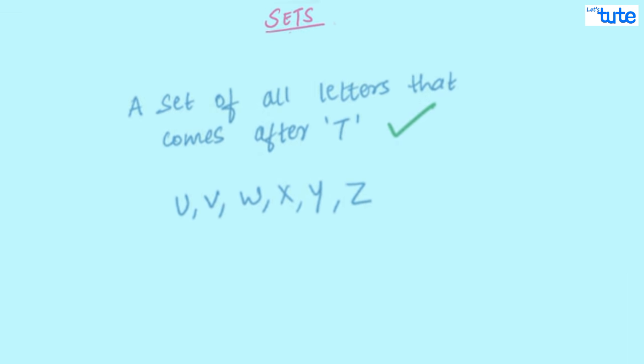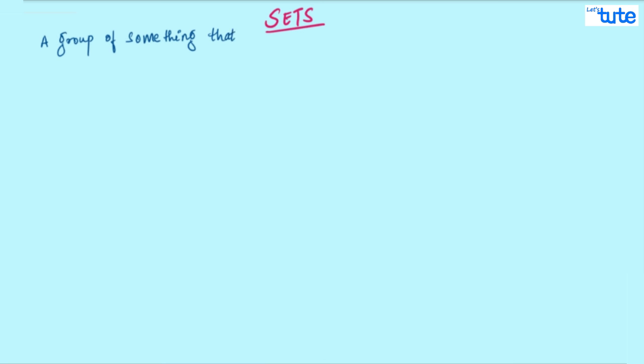Let's see a few of these examples if we can form a set of them or not. The first is states of India. So, can we form a set of this? Yes. Because there are 29 states in India and you can list all of them.